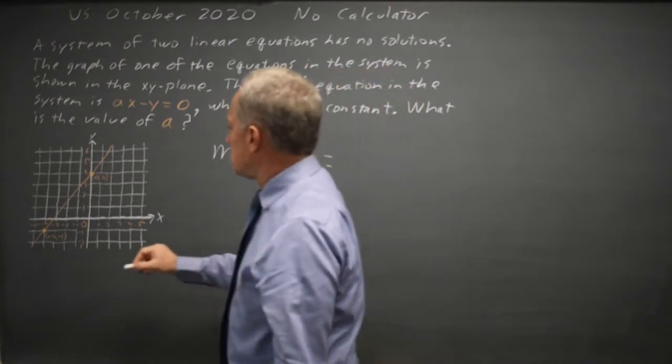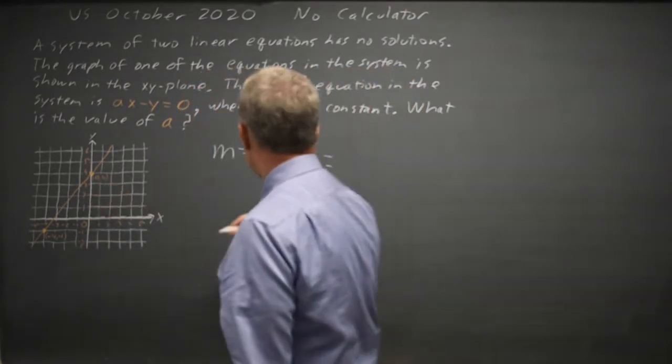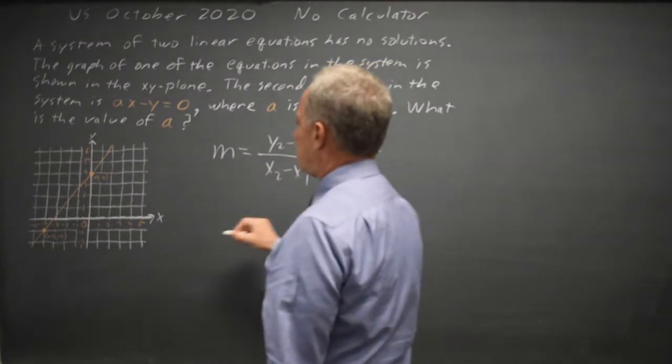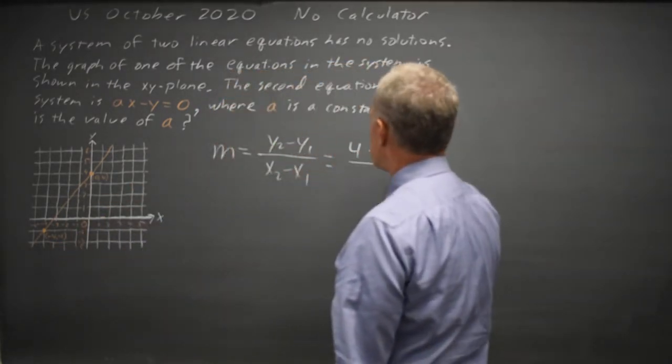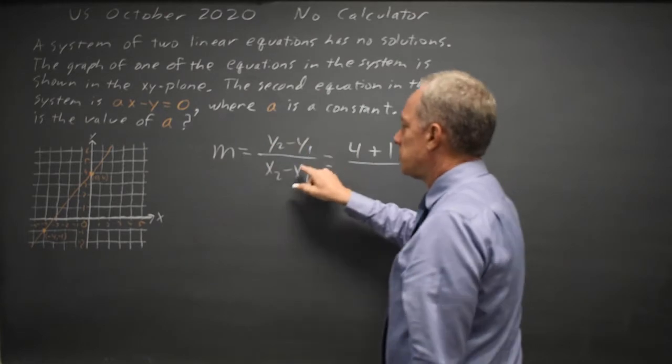So the Y value here is 4 and the Y value for the second point is negative 1, so 4 minus negative 1 is 4 plus 1 for Y2 minus Y1.